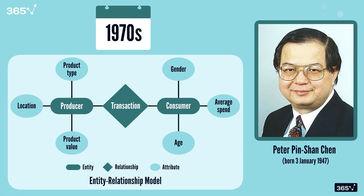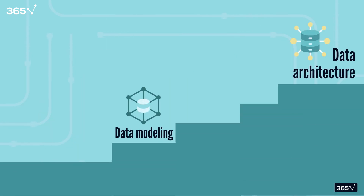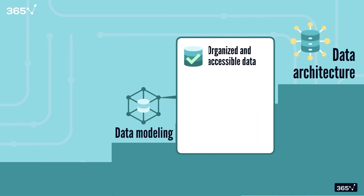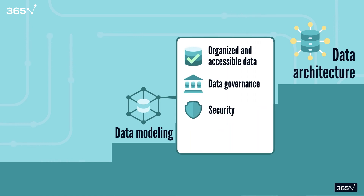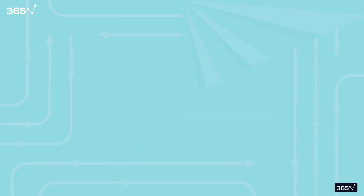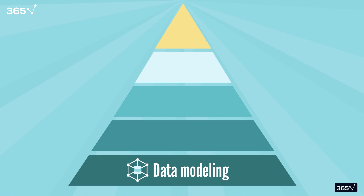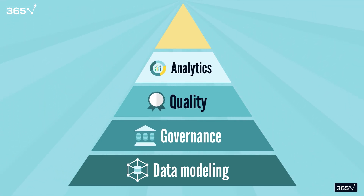It just goes to show how fundamental data modeling is in the data world. Data modeling is one of the first steps in building a robust data architecture. It ensures your data is organized and accessible, laying the groundwork for data governance, security, quality management, and beyond. Without a strong model, your data architecture could crumble under the weight of bad design decisions. Think of data modeling as the foundation of a pyramid — everything else in your data architecture, governance, quality, analytics, and more, rests on this solid base.